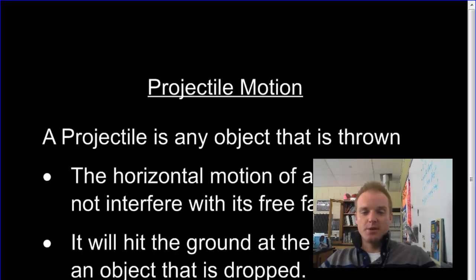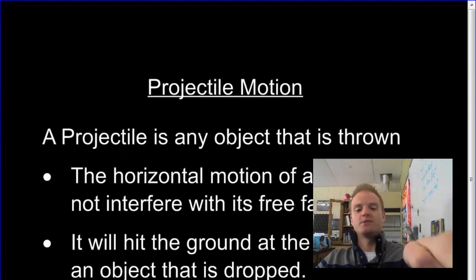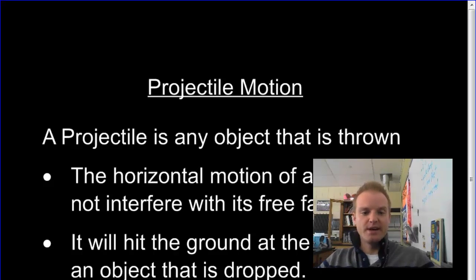Now, when we think about a pure projectile, we're not throwing it up in the air, we're not throwing it down, we're throwing it straight, that horizontal motion. So the horizontal motion of an object does not interfere with its free fall. So as I throw it, the movement, it has inertia going this way. The force that pulls it down, gravity, is a totally separate force, that free fall. Gravity is one of the forces pulling it down. So those things are totally separate.